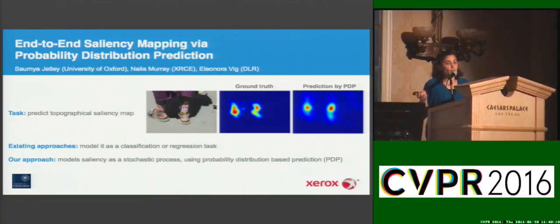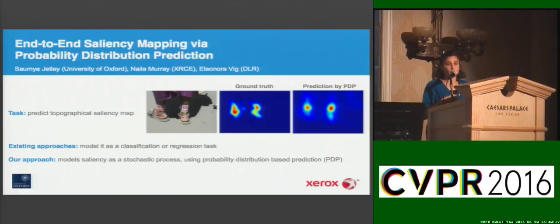Saliency has been widely used for tasks such as generating image thumbnails for fine-grained action recognition, and as we observed over the past few days, it has been used in visual question answering and image captioning.